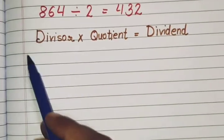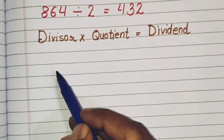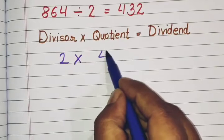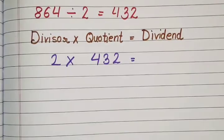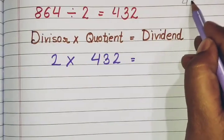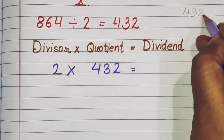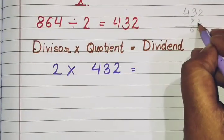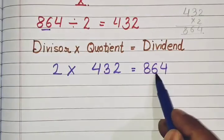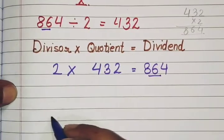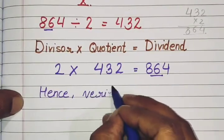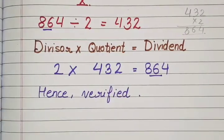Now we have to verify the answer. The formula is: divisor into quotient is equal to dividend. Divisor is 2, multiply by quotient 432. After multiplication: 2 twos are 4, 2 threes are 6, 2 fours are 8 — the answer is 864. The dividend is 864, and these two are the same, so the answer is correct. Hence verified.